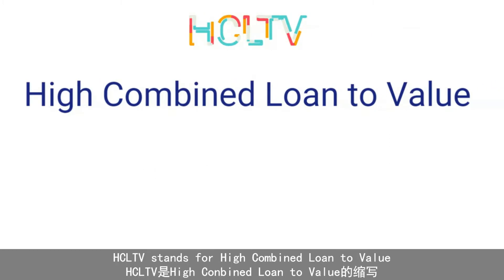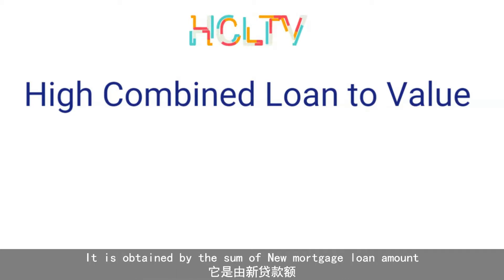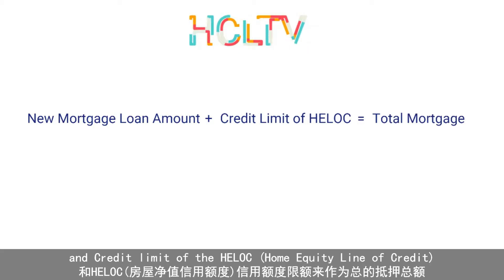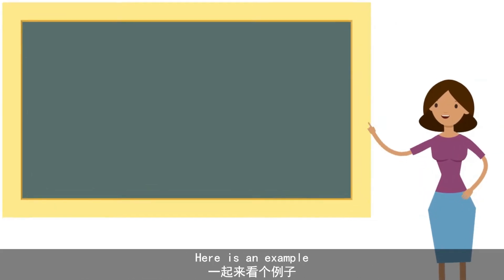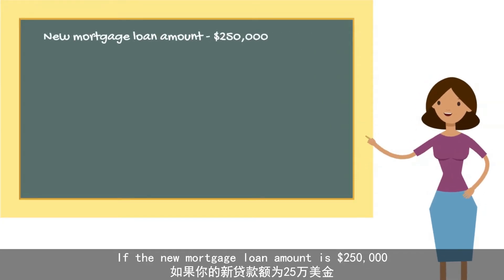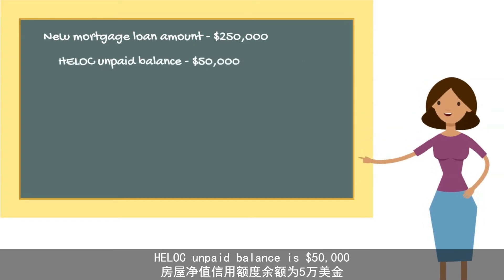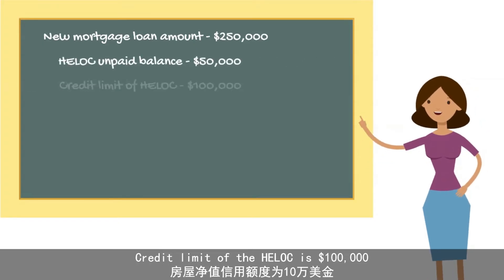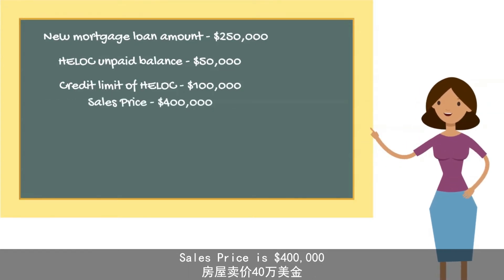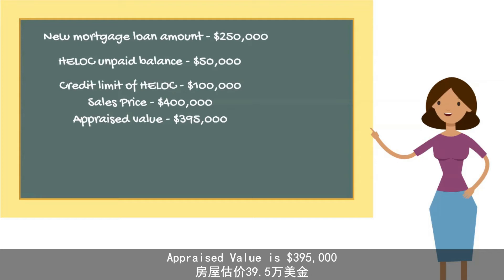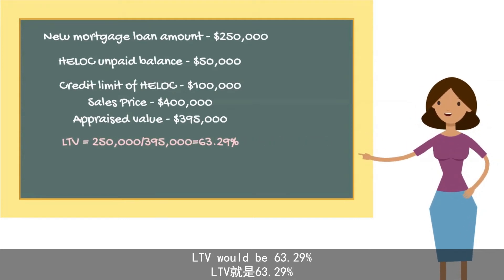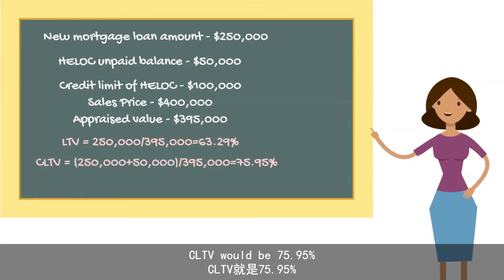HCLTV stands for High Combined Loan-to-Value. It is obtained by the sum of a new mortgage loan amount and the credit limit of the HELOC. Here is an example: if you have a new mortgage loan of $250,000, a HELOC unpaid balance of $50,000, a credit limit of the HELOC of $100,000, a sales price of $400,000, and an appraised value of $395,000, then the LTV will be about 63%, CLTV will be 75%, and HCLTV will be about 88%.